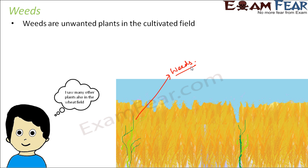Interestingly, the farmer has not sown seeds for these unwanted plants. Weeds have a characteristic that they can just grow anywhere in any condition — they tend to grow by themselves without the farmer needing to sow their seeds or water them. The farmers have to give enough attention to check whether there are weeds present, because weeds are very commonly found in cultivated fields.